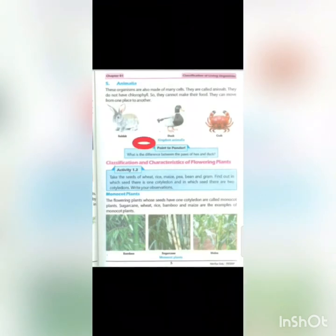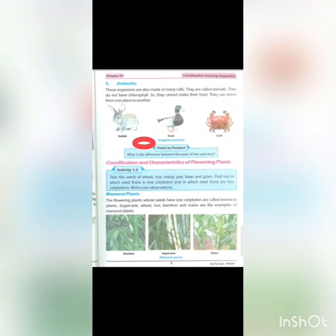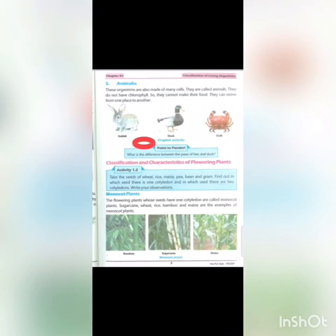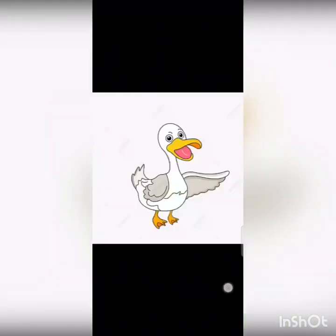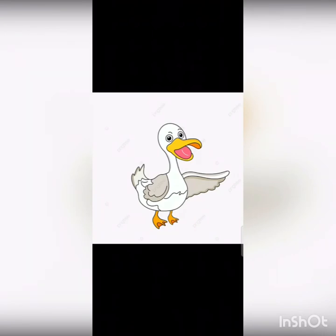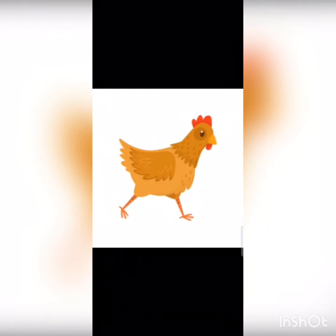As you can see at the red circle — point to ponder: what is the difference between the paws of a hen and a duck? The fingers of a duck's paw are joined together by a membrane, a thin film connecting them. Whereas the fingers of a hen's paw are separate from each other. This is the difference between their paws.